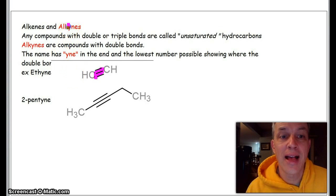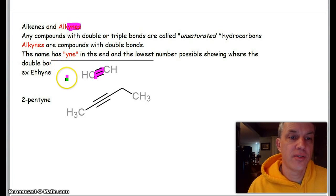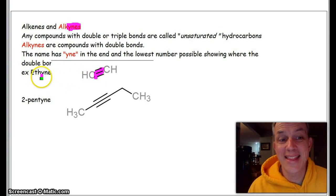So they always end in -yne. As an example, there's a triple bond—it'd be ethyne. There's the triple bond. Here is one, two, three, four, five—five carbons. We know it's pentyne.